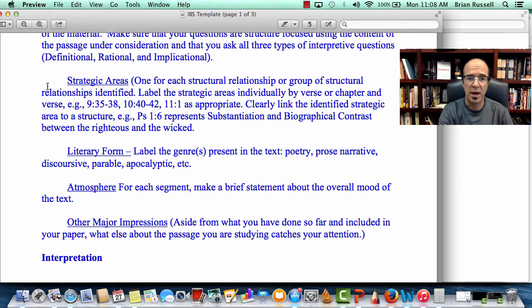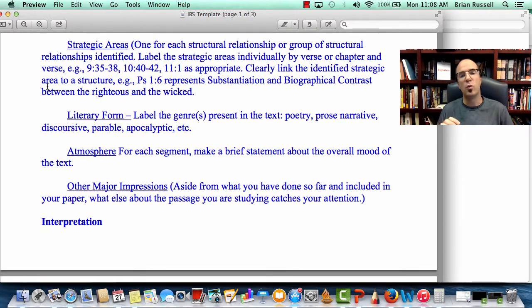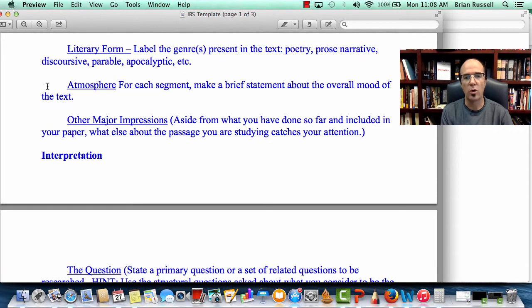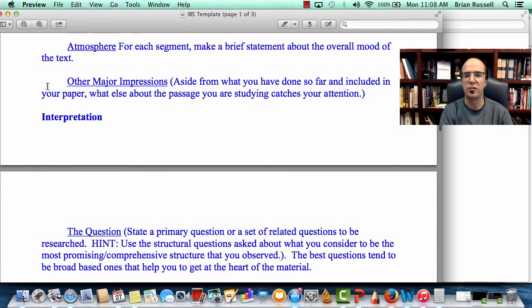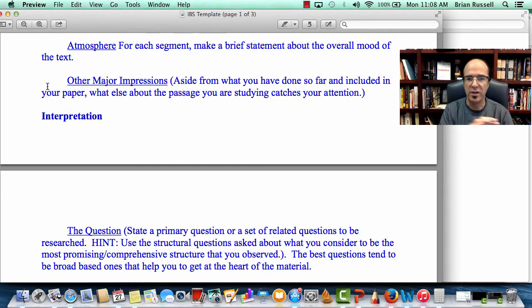For each structure, you're also going to want to have a strategic area. I have a separate video on the strategic areas, but you justify why an area is strategic, not based on whether you like that section, but you want to find for each structure a smaller portion of the text that best exemplifies that structure. Then, make a comment about the literary form of the passage, its atmosphere or tone, and then give any other kind of major impressions, things that you want to remember about the passage that didn't fit into your survey.